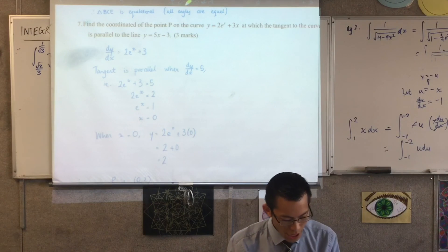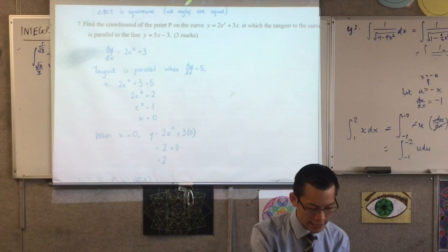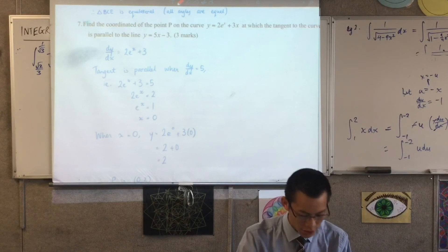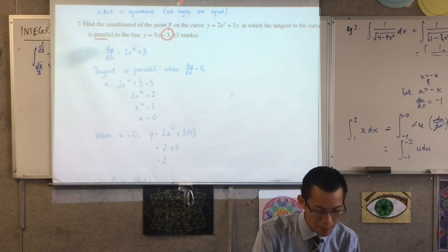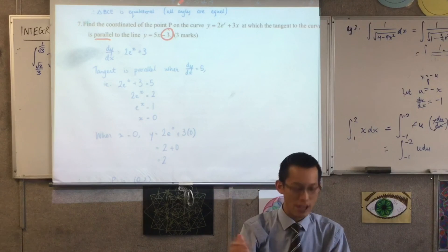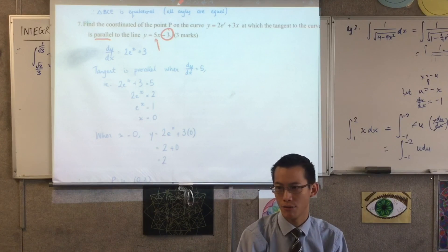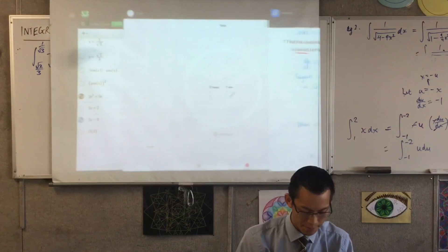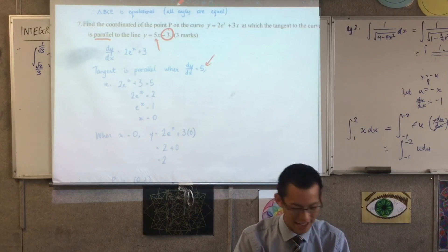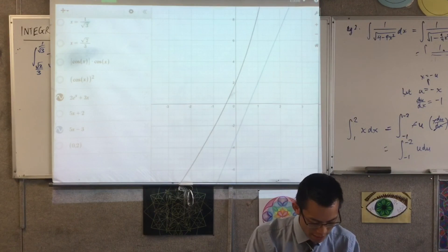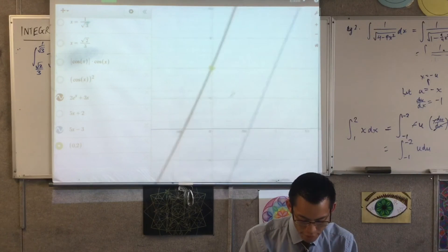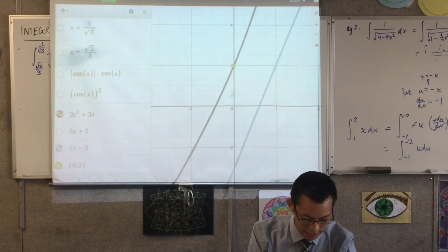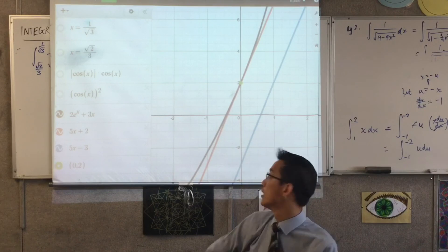Last one — the answer is (0, 2). You can see there's some irrelevant information in the question. The constant doesn't matter because if lines are parallel, that line can be shifted anywhere; the important number is the gradient. Once you've got that, you get your x-value out and substitute back in. Here's my proof — there's the point, (0, 2), and if you really want to see the tangent, there it is. They are looking pretty parallel.